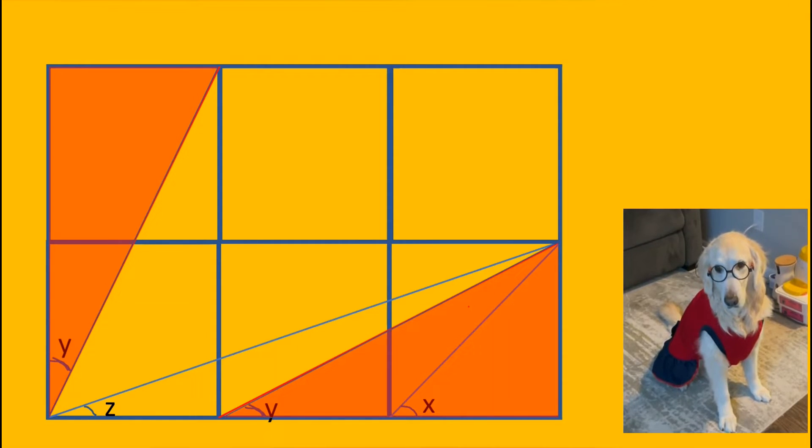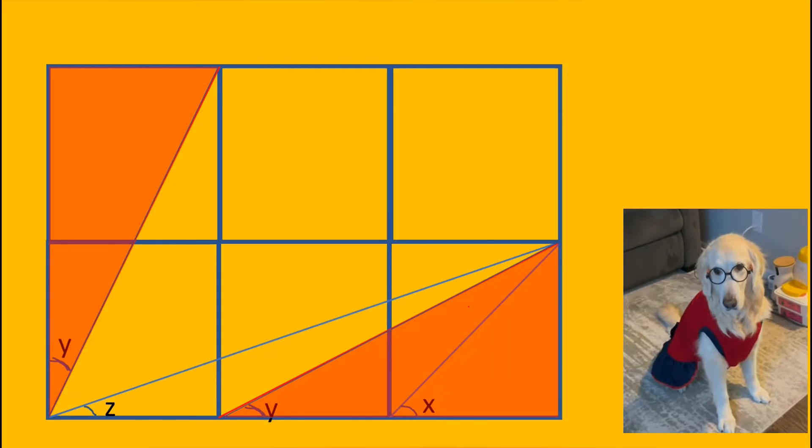And these two red triangles are congruent. So, angles should be the same. Therefore, this angle is also equal to y.